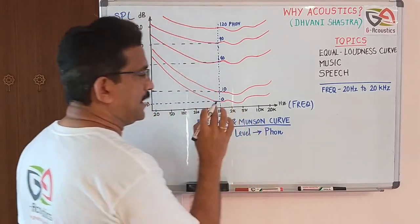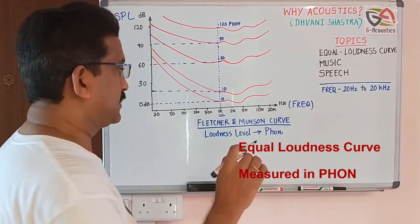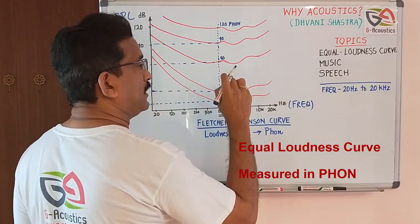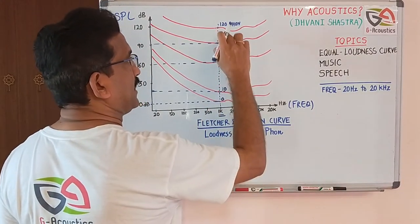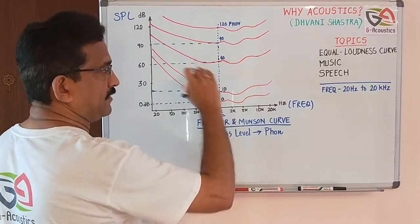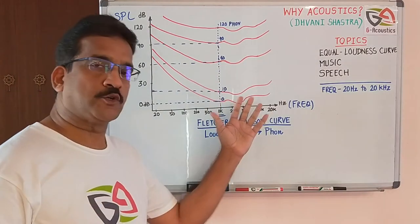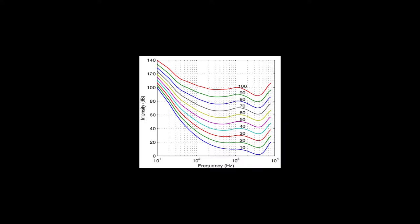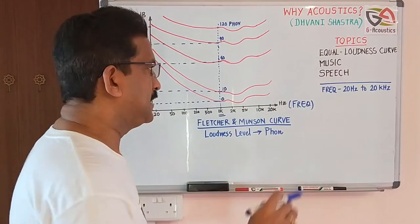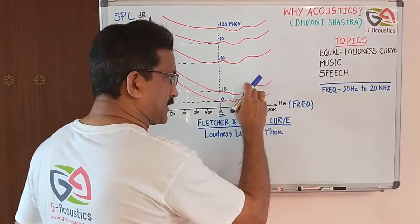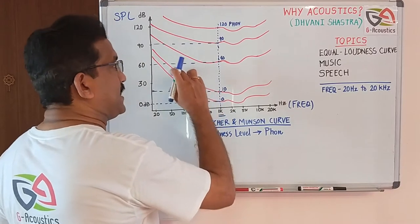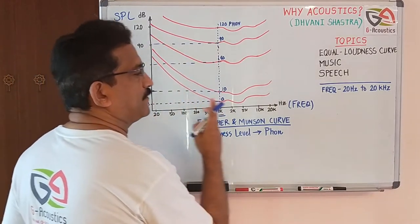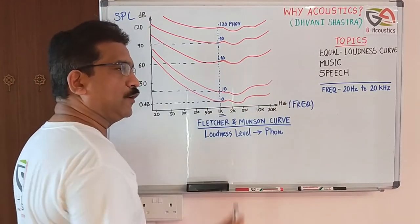The reference frequency is one kilohertz. Loudness level is determined in terms of phons, so here we have zero phon, ten phon, sixty, ninety, and one hundred phon curves — of course there are values in between. The equal loudness curve determines equal loudness at different frequencies.